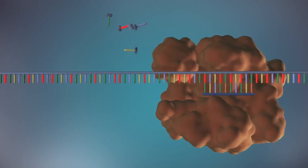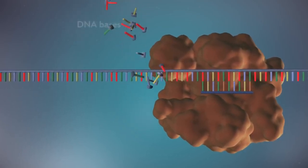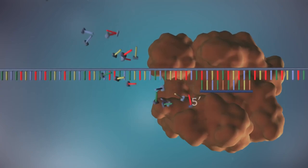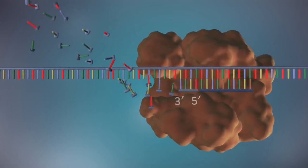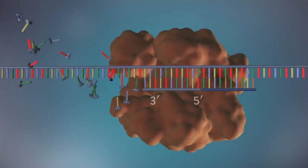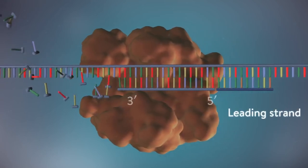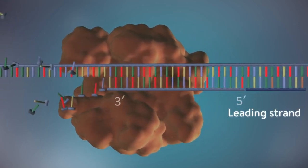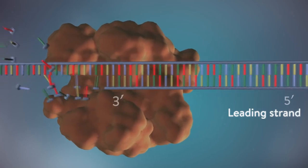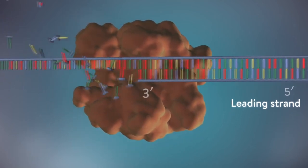DNA polymerase can only add DNA bases in one direction, from the 5' end to the 3' end. One of the new strands of DNA, the leading strand, is made continuously, the DNA polymerase adding bases one by one in the 5' to 3' direction.